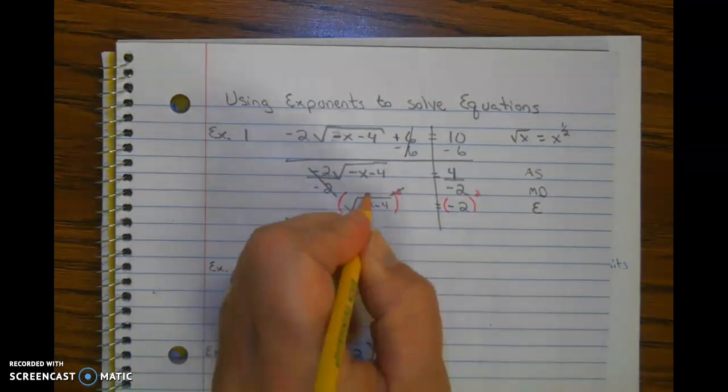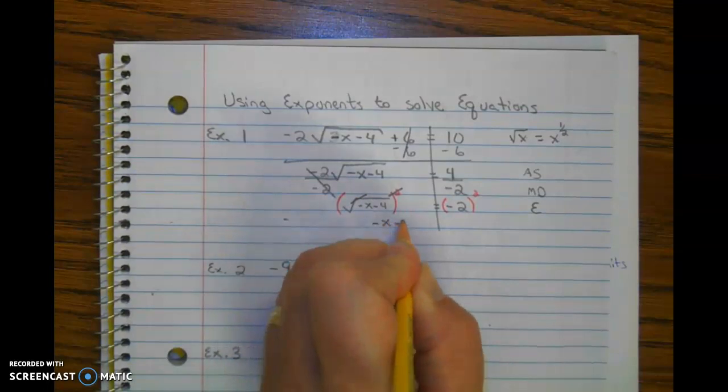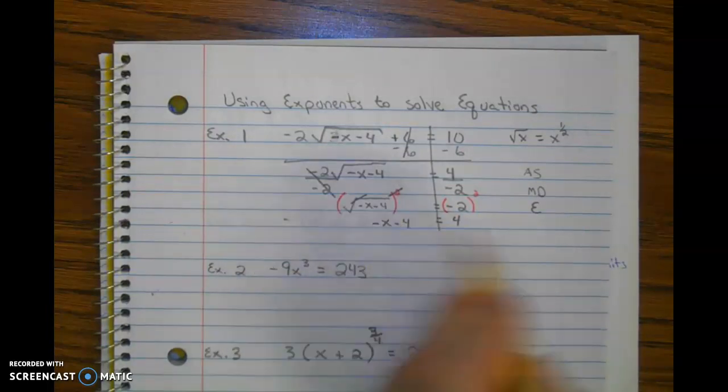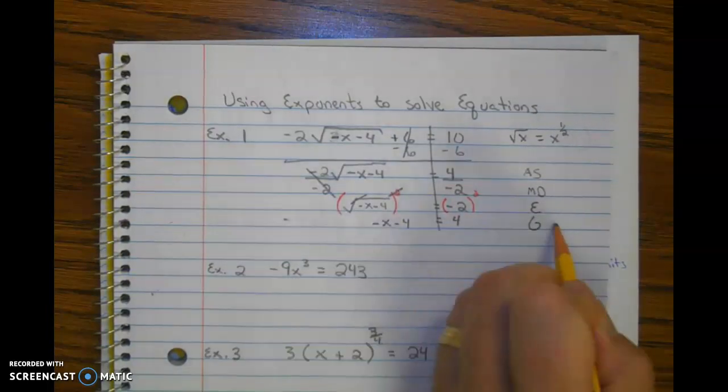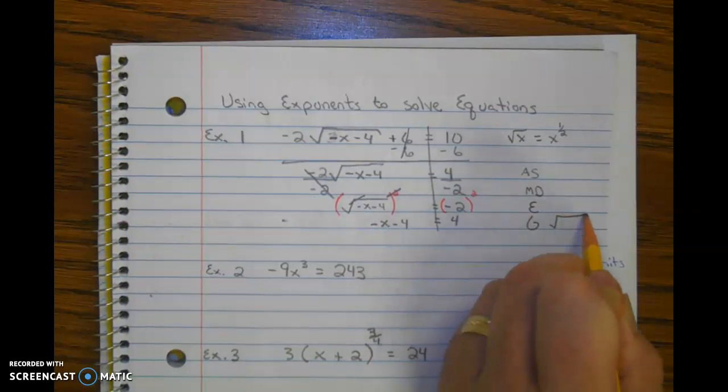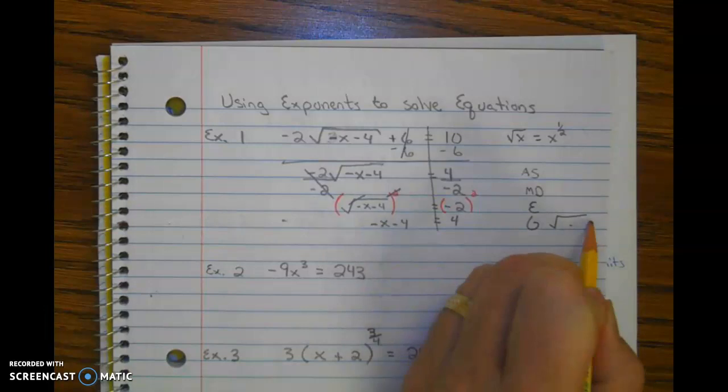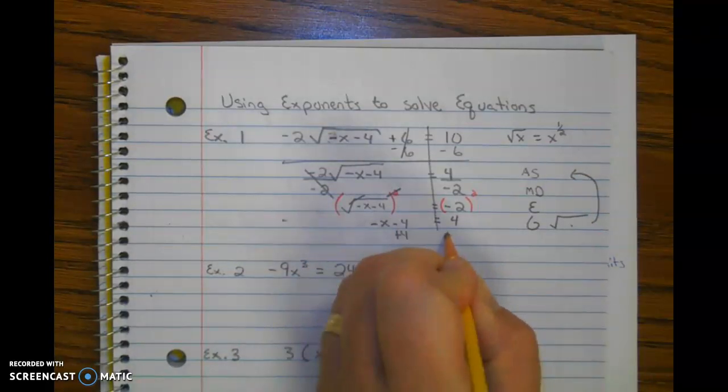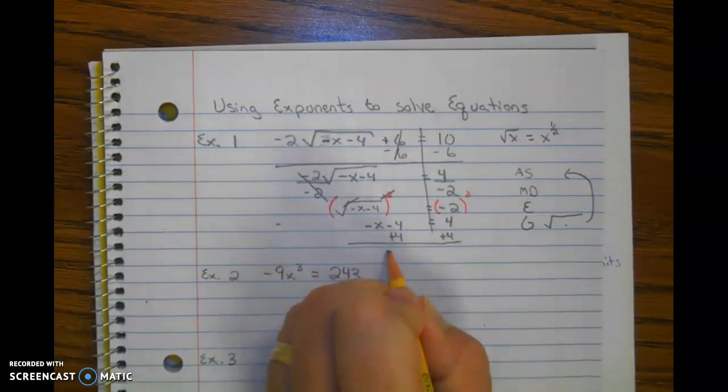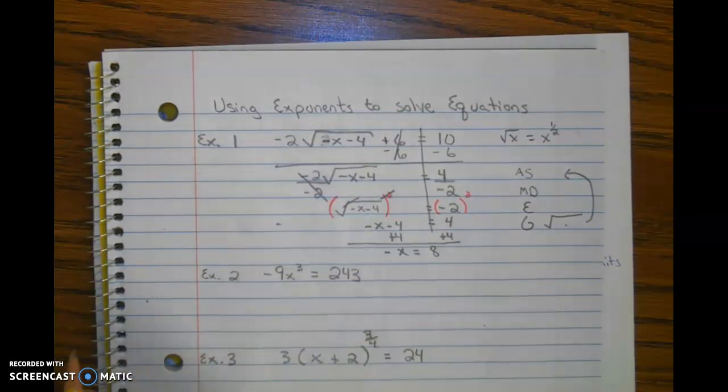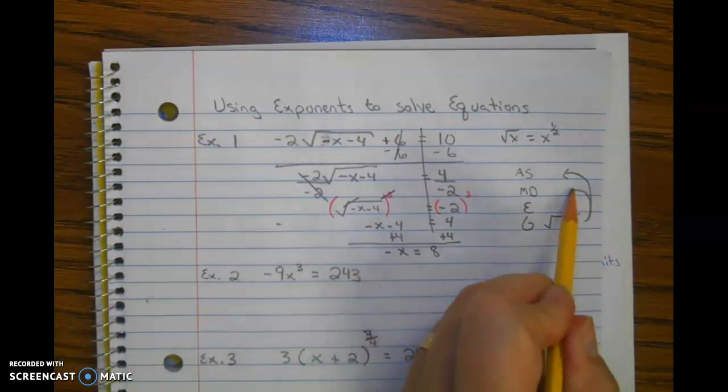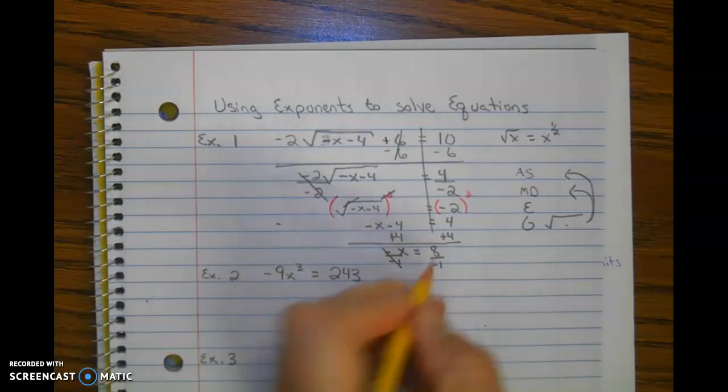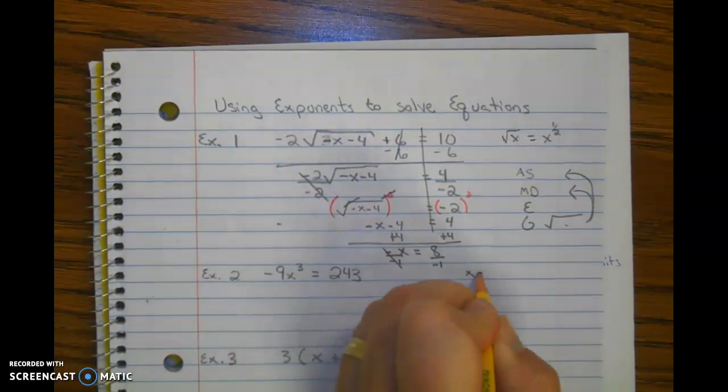So the square cancels out the square root. Now, once we're inside the grouping symbol, in this case the grouping symbol that we're inside is the radical, we undo what's on the inside. So now we start back over with undoing adding and subtracting, and then we undo multiplying and dividing. And so we get a solution of x equals negative 8.